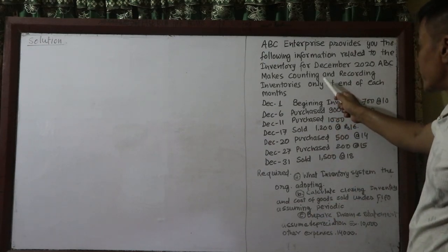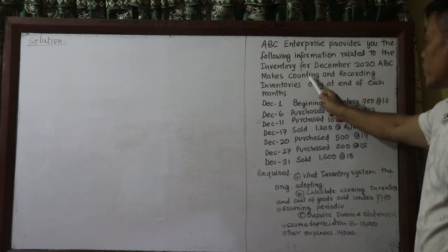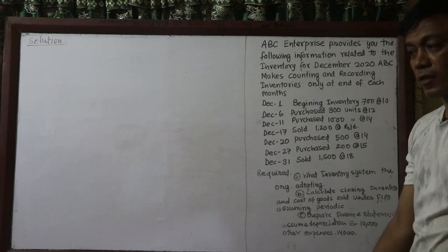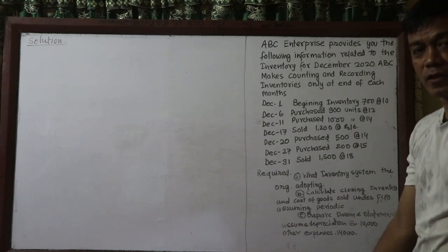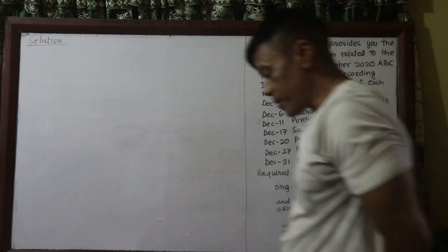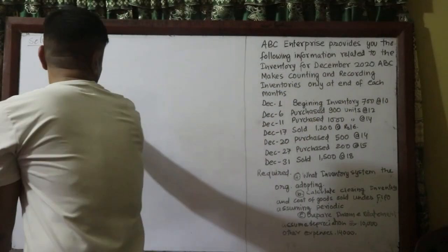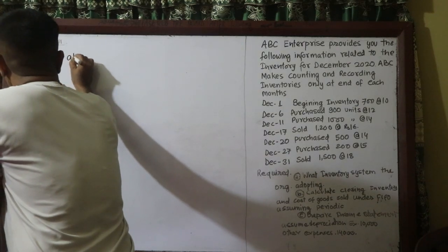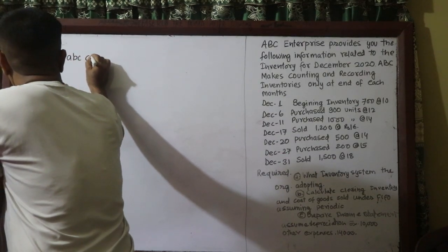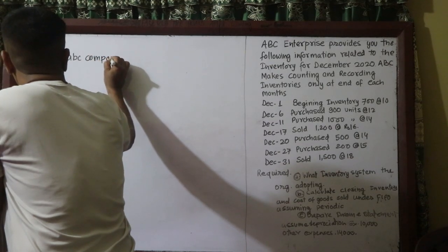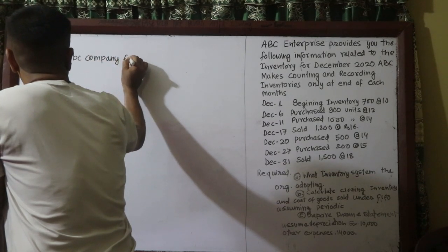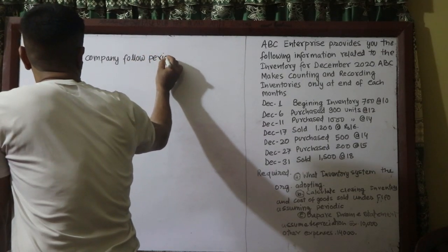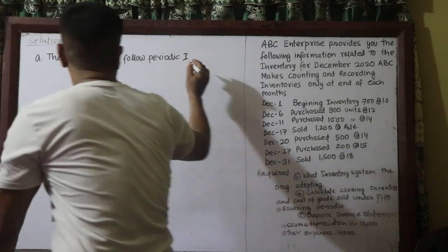So we can write here that the ABC company followed a periodic inventory system.